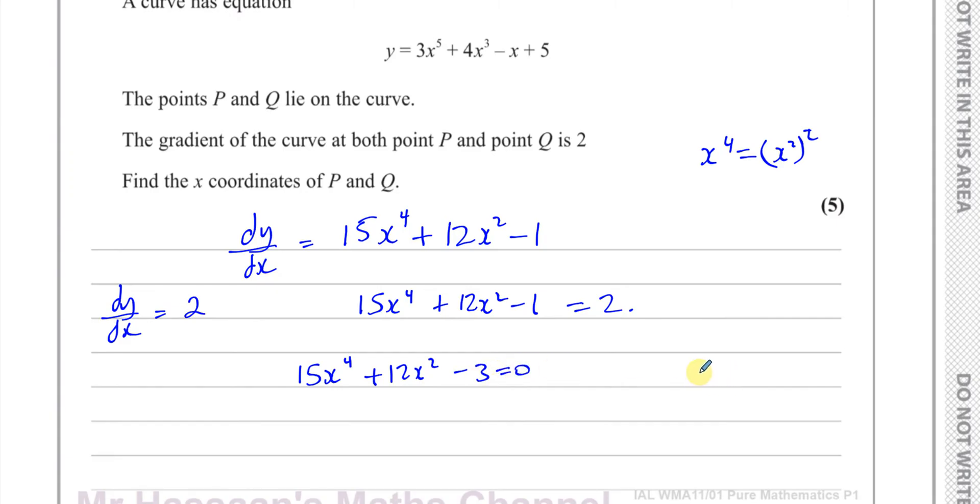What we can do to make life a bit simpler is let some letter equal x squared. So let b equal x squared for example. So this will be 15b squared plus 12b minus 3 equals 0. Because b equals x squared, x to the power of 4 will therefore be b squared. b squared is x to the power of 4. So I can replace x to the power of 4 with b squared. So I have 15b squared plus 12b minus 3 equals 0.